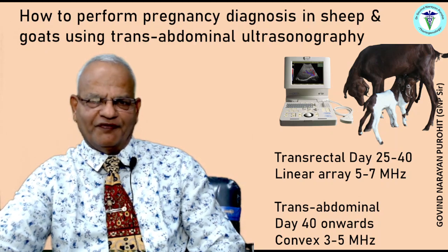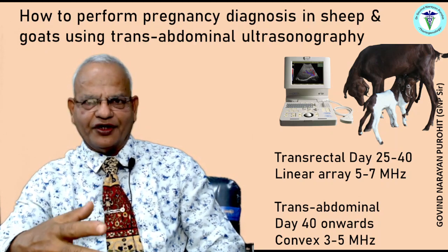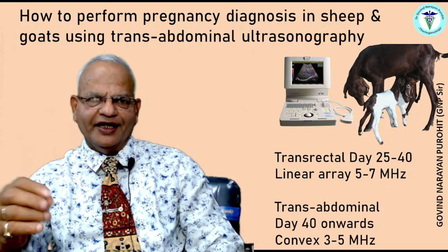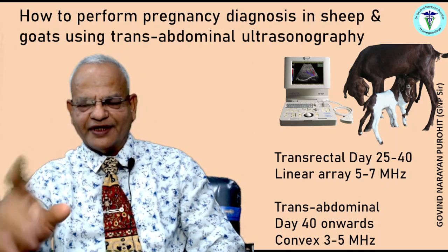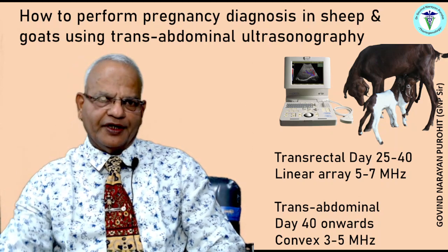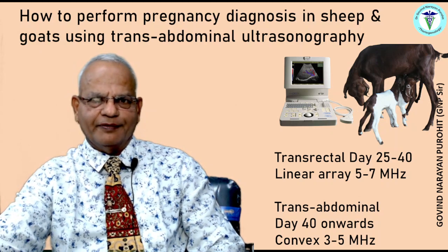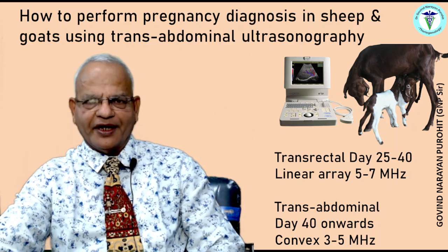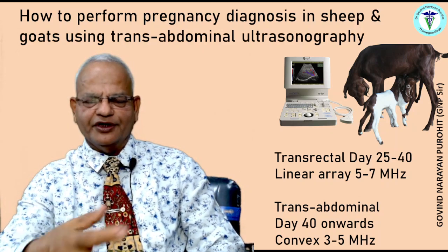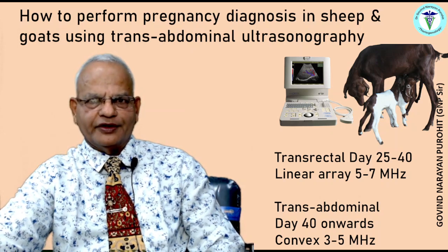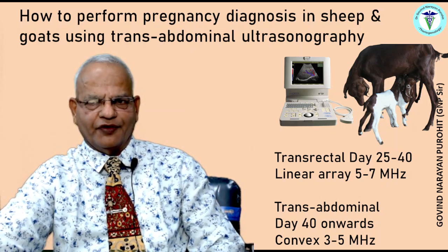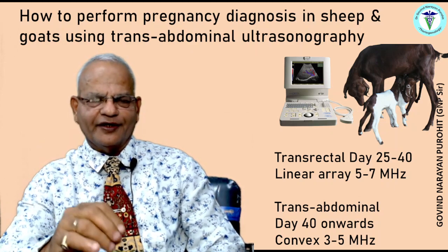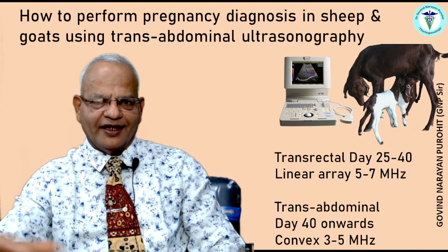If one needs to perform pregnancy diagnosis earlier than day 40 — so between day 25 to 40 — you would need a linear array probe of 5 to 7 megahertz frequency. But if you are going to perform transabdominal ultrasound, you need a probe between 3 to 5 megahertz, maybe a convex probe, and sometimes even a linear array probe can be used for transabdominal examination.